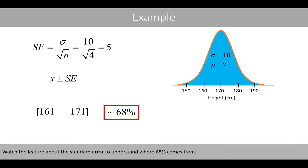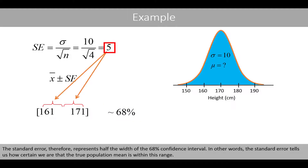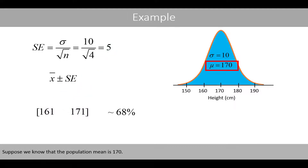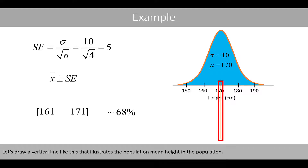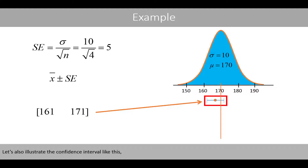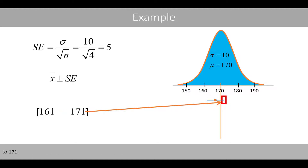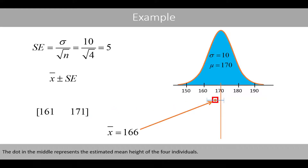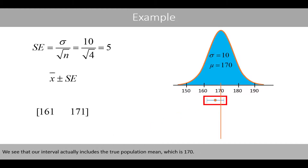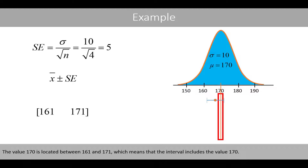Watch the lecture about the standard error to understand where 68% comes from. The standard error therefore represents half the width of the 68% confidence interval. In other words, the standard error tells us how certain we are that the true population mean is within this range. Suppose we know that the population mean is 170. Let's draw a vertical line that illustrates the population mean height in the population. Let's also illustrate the confidence interval that spans from 161 to 171. The dot in the middle represents the estimated mean height of the four individuals. We see that our interval actually includes the true population mean, which is 170. The value of 170 is located between 161 and 171, which means that the interval includes the value 170.